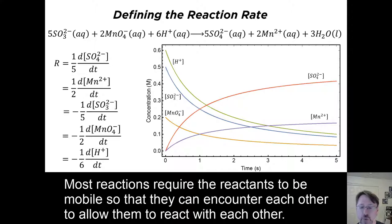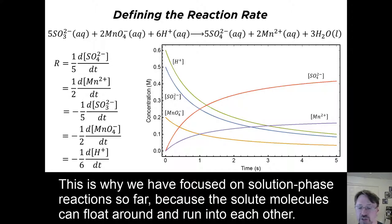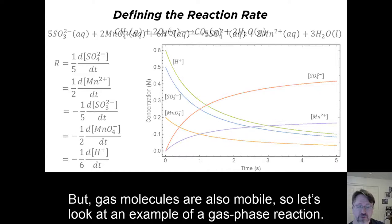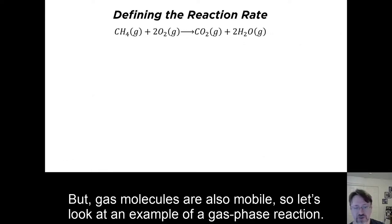Most reactions require the reactants to be mobile so that they can encounter each other to allow them to react with each other. This is why we have focused on solution phase reactions so far, because the solute molecules can float around and run into each other. But gas molecules are also mobile, so let's look at an example of a gas phase reaction.